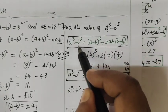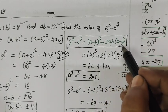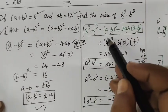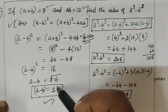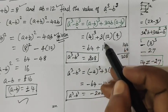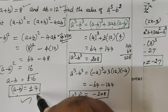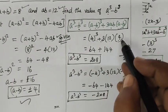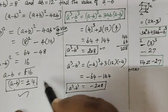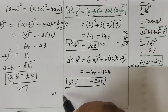You know the formula a³ − b³ = (a − b)³ + 3ab(a − b). We already found a − b. Substituting: 4³ + 3 × 12 × 4 = 64 + 144 = 208. So the answer is 208. If we take the minus value, the answer is −208.